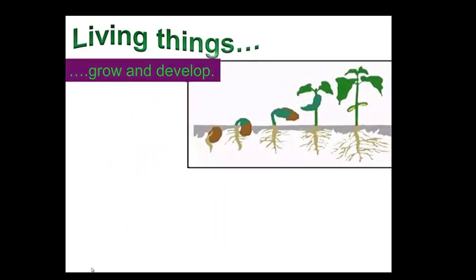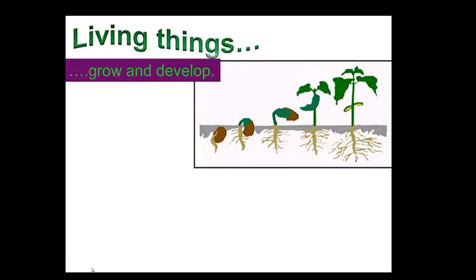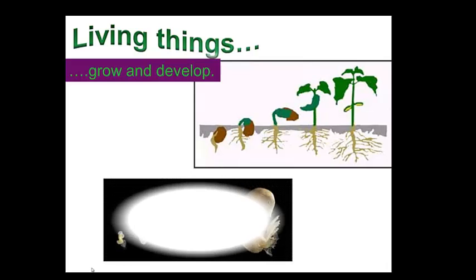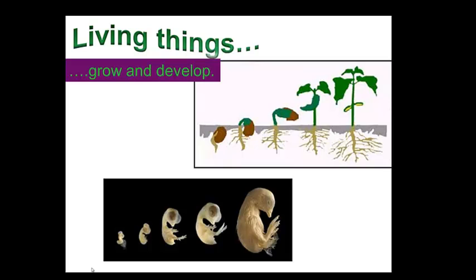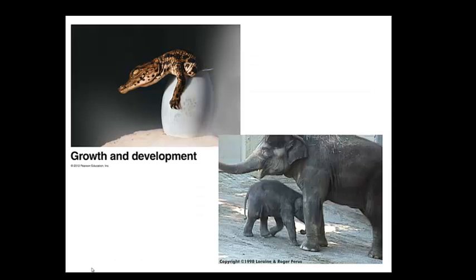Living things grow and develop. Here we see a plant developing from a seed, and here a chick from an embryo in the egg. Growth simply means that something gets bigger in size. Development involves a change in the physical form or physiological makeup of the organism. Growth and development are controlled by DNA.